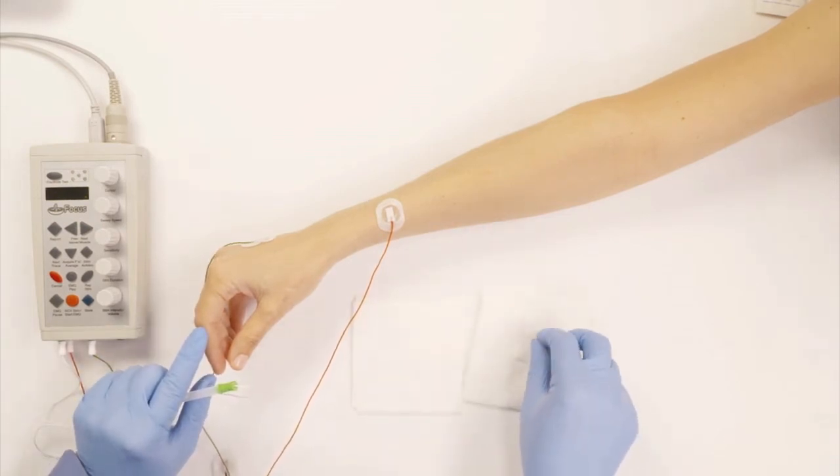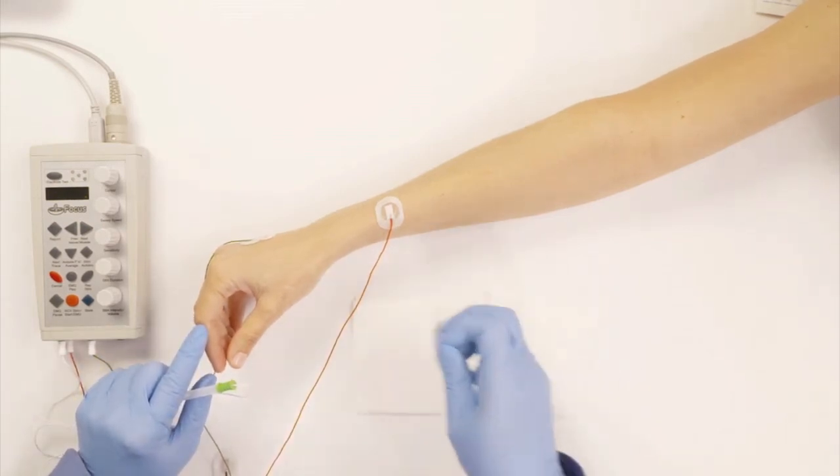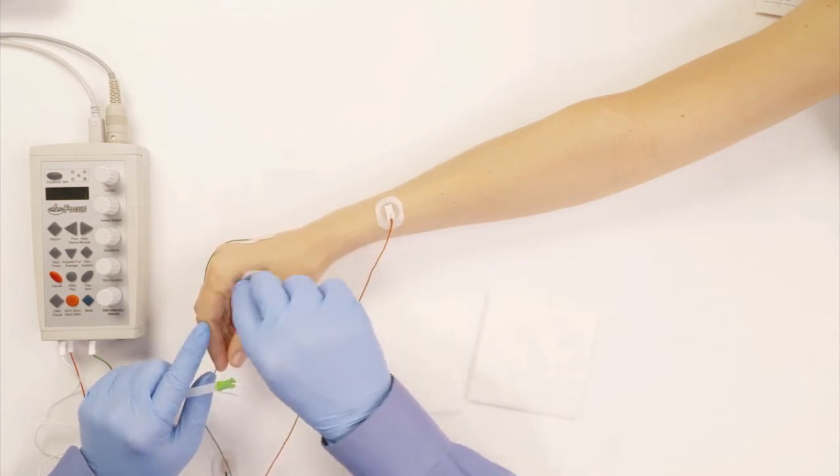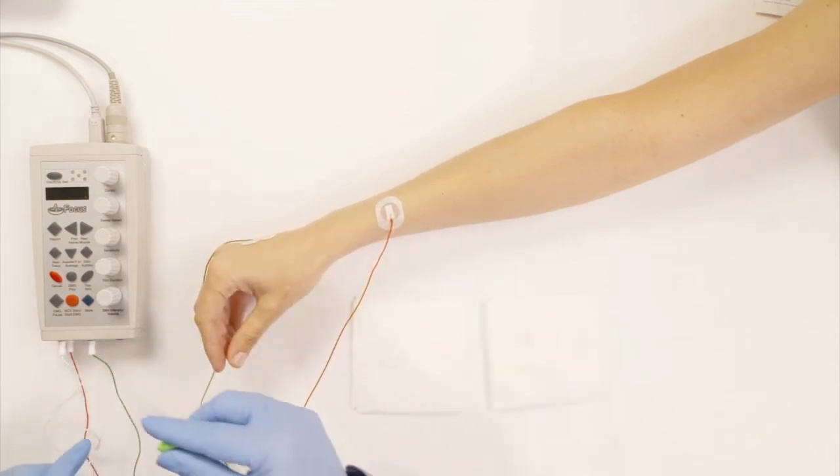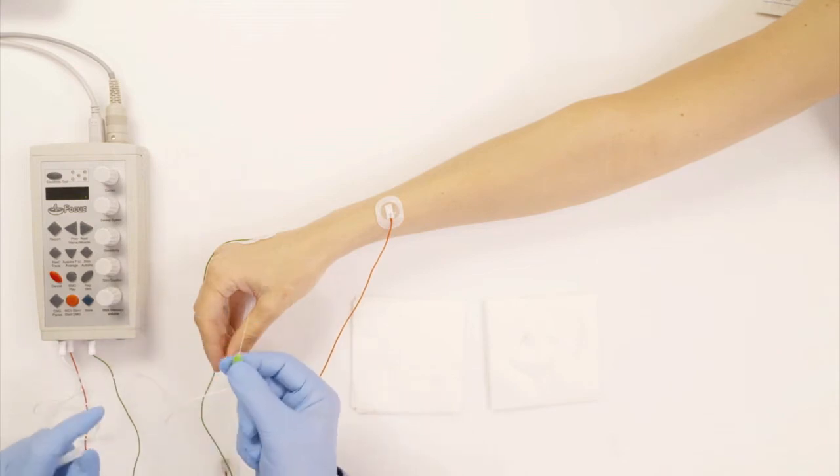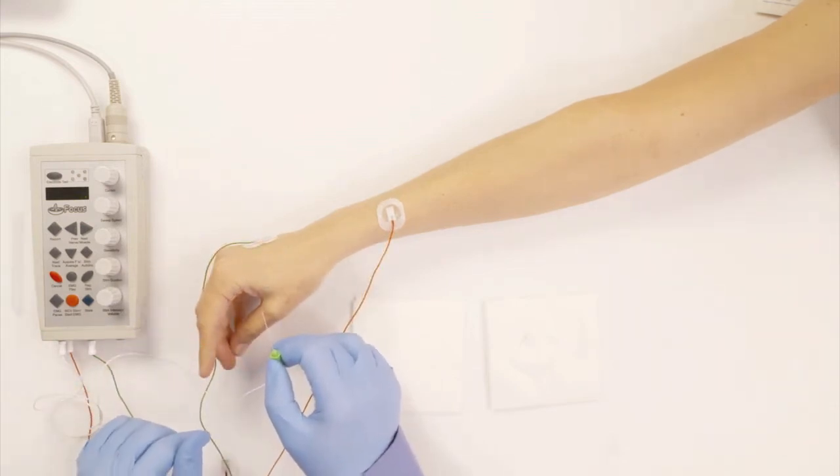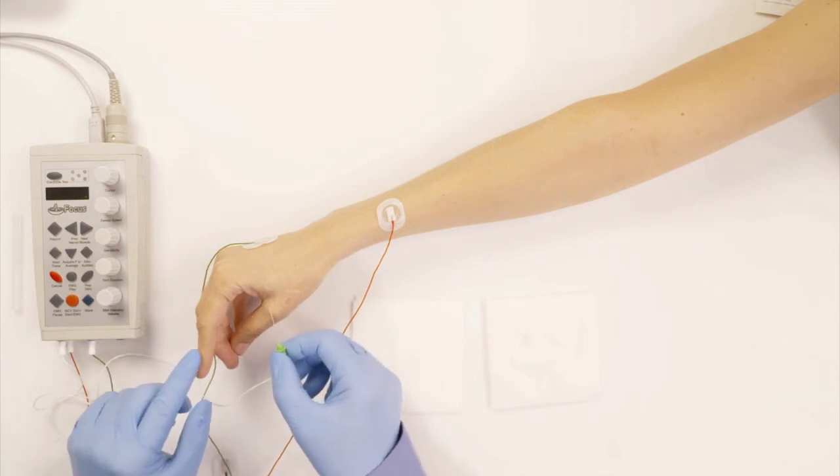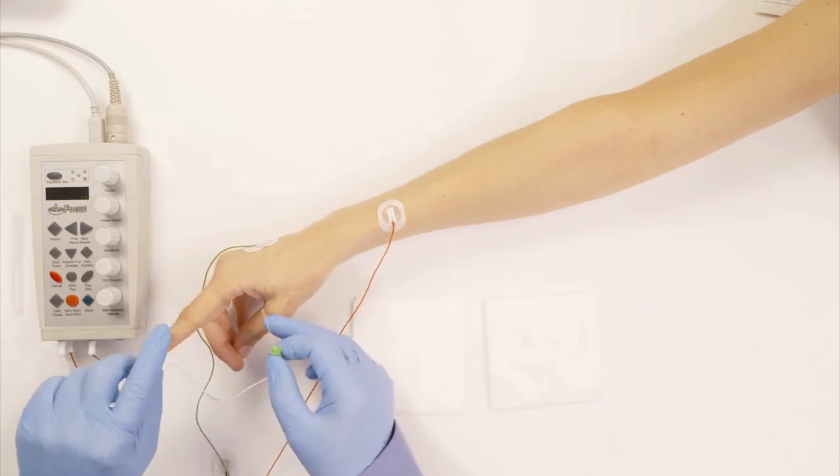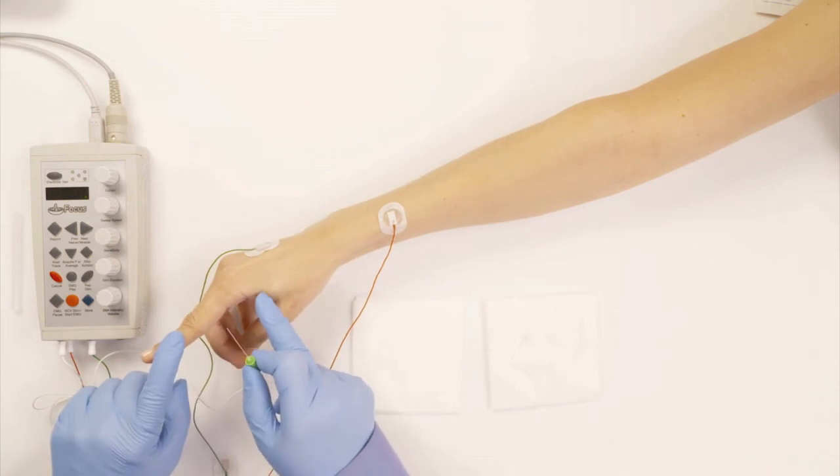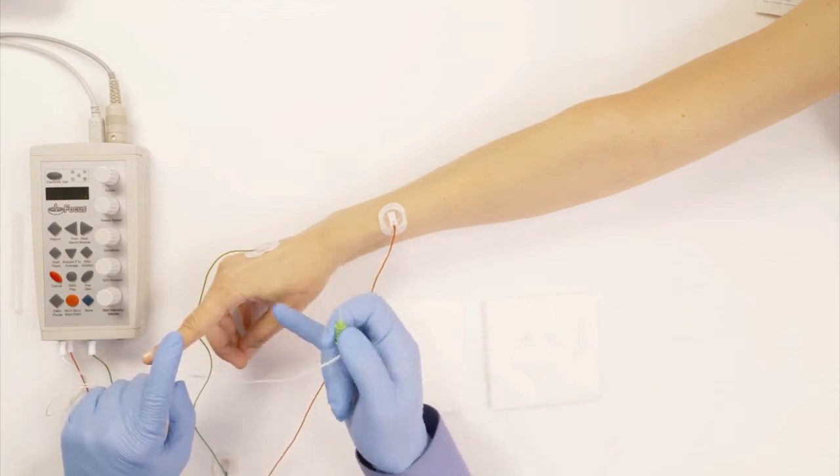So the first thing I do is I'm going to wipe the skin with the alcohol swab. And then this is the needle. And we're going to insert the needle in the muscle. So to find out where the muscle is so that I can stick the needle, I'm going to ask you to activate the muscle by lifting the index finger up. And you can tell right here that this is where the muscle is.